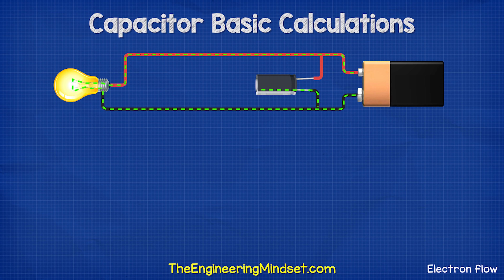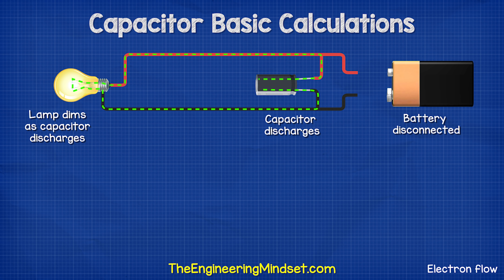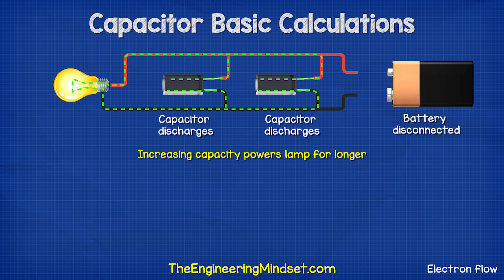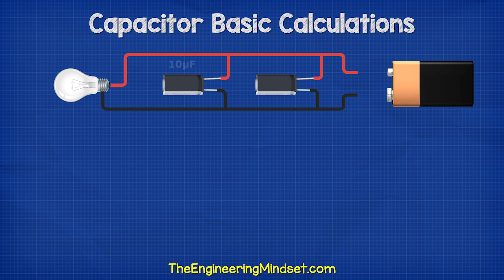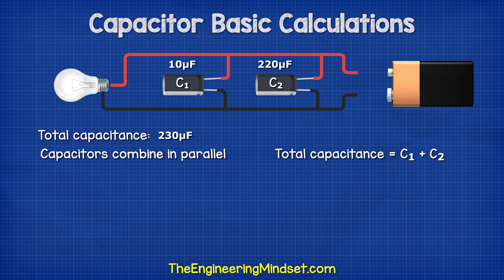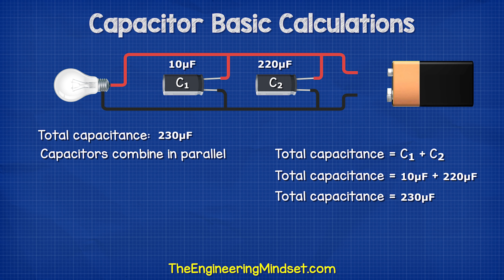If we place a capacitor in parallel with a lamp, when the battery is removed the capacitor will begin to power the lamp — it slowly dims as the capacitor discharges. If we use two capacitors, we can power the lamp for longer. Let's say capacitor 1 is 10 microfarads and capacitor 2 is 220 microfarads. The total capacitance is simply 10 plus 220 equals 230 microfarads.